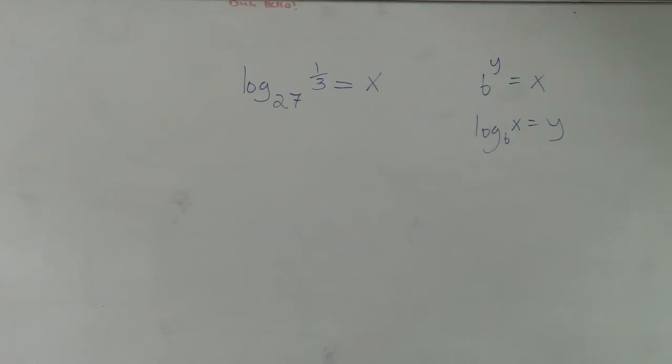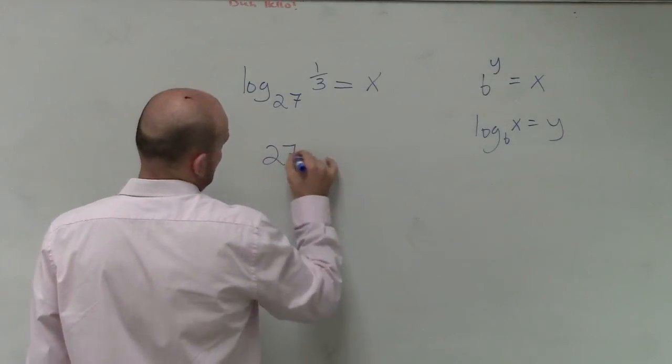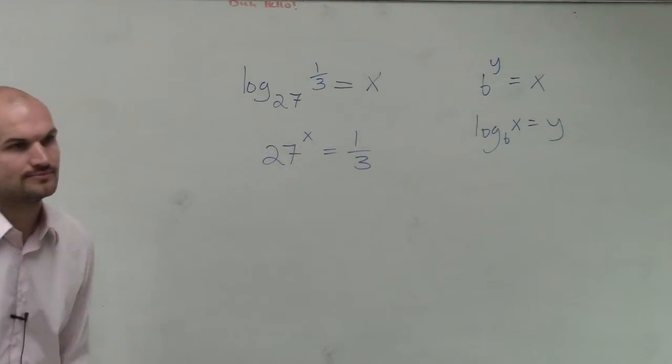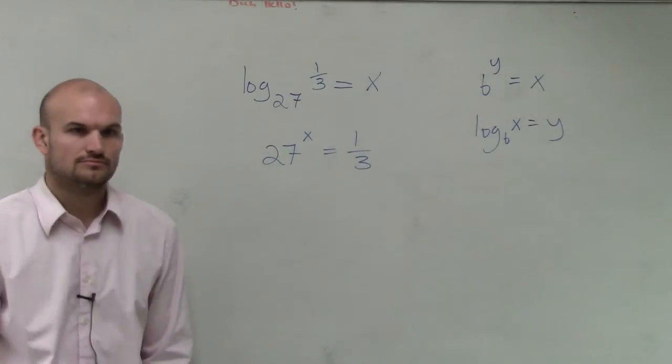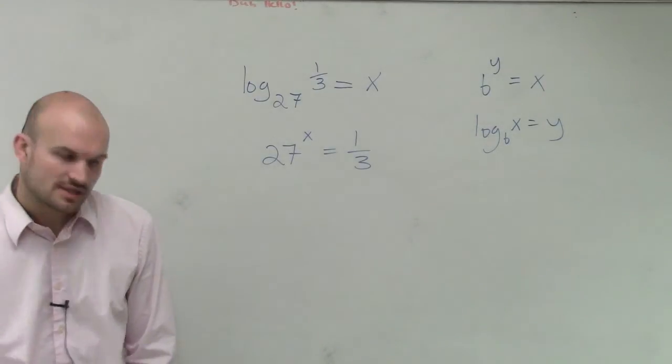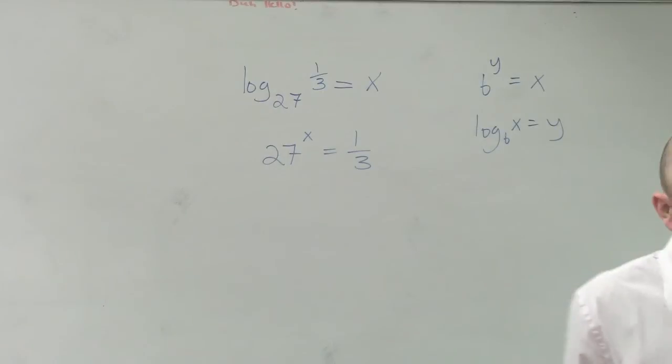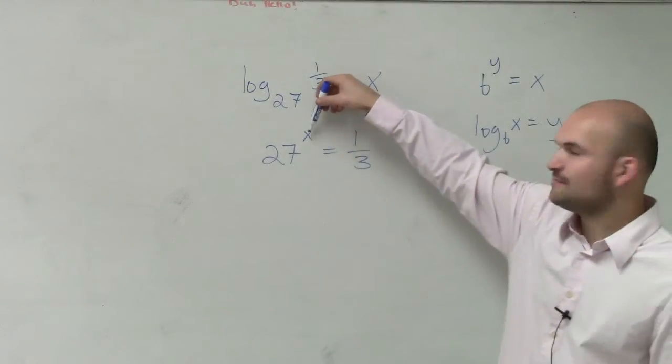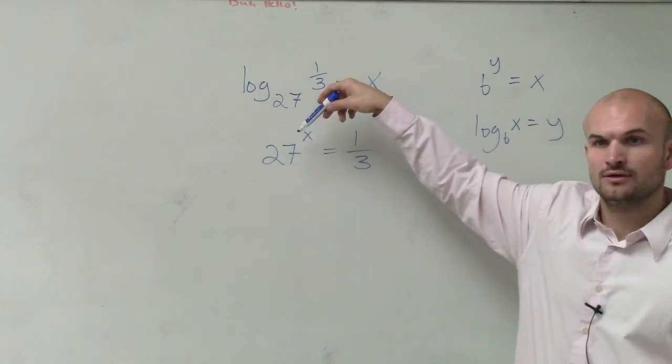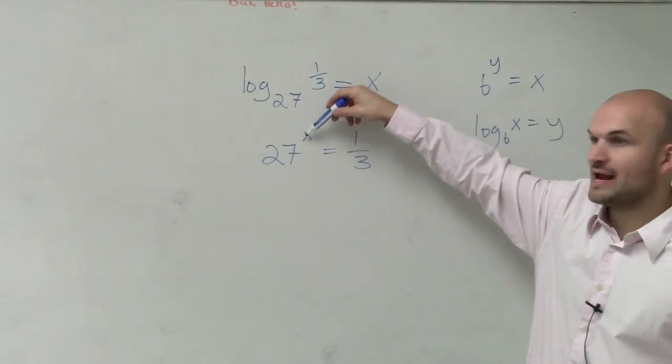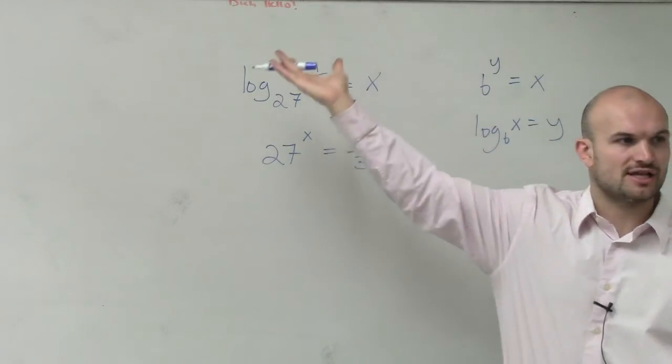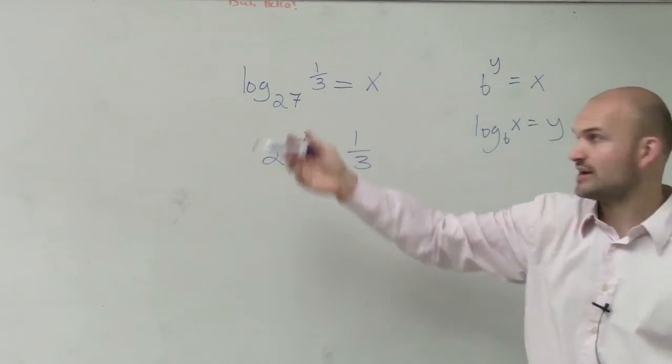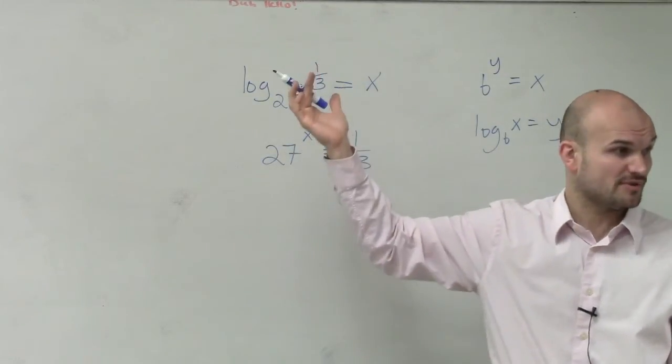So what this is pretty much saying is 27 raised to what power equals 1/3? So let's take a look at it and see how we're going to get to this. So first of all, 27 raised to a power - if my power is greater than 0, am I going to get numbers that are larger than 27 or smaller than 27? Larger. Think of like 27 squared, 27 cubed. Those are going to be pretty big numbers, right?